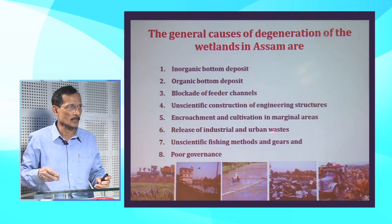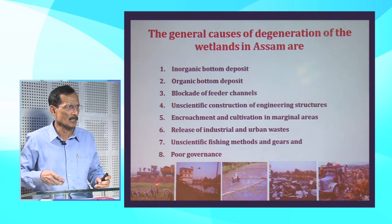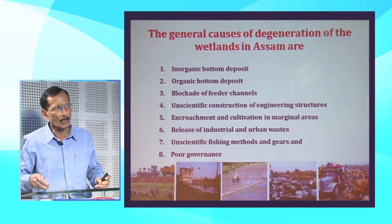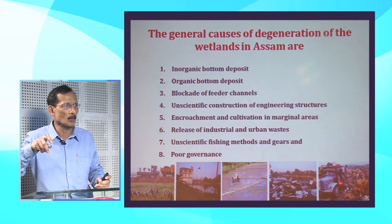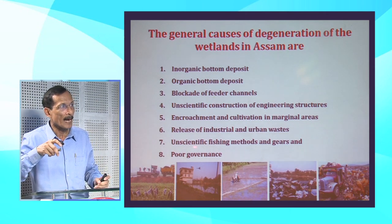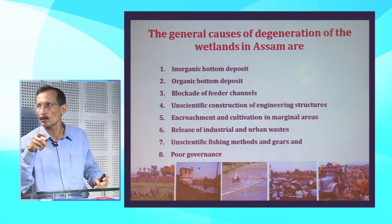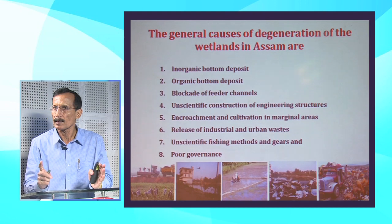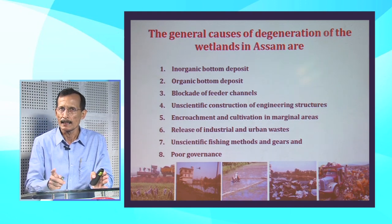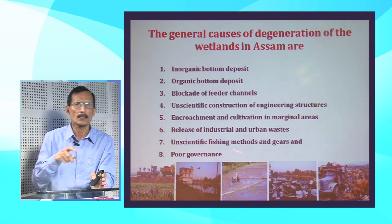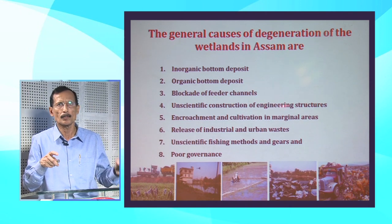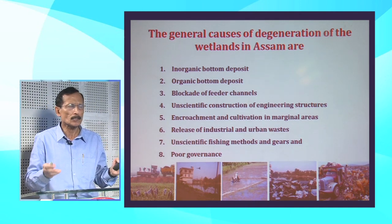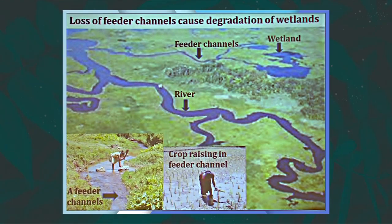The release of industrial and urban waste is very dangerous to wetlands — buildings have been constructed in wetlands, earth-filling is ongoing, and solid and liquid industrial waste is being dumped in wetlands. Unscientific fishing methods and gears also contribute to deterioration. Poor governance is another major issue: in Assam, four different departments — revenue, forest, forest fishery development corporation, and fishery development — control the wetlands, making it effectively nobody's business, which results in wetlands deteriorating day by day.